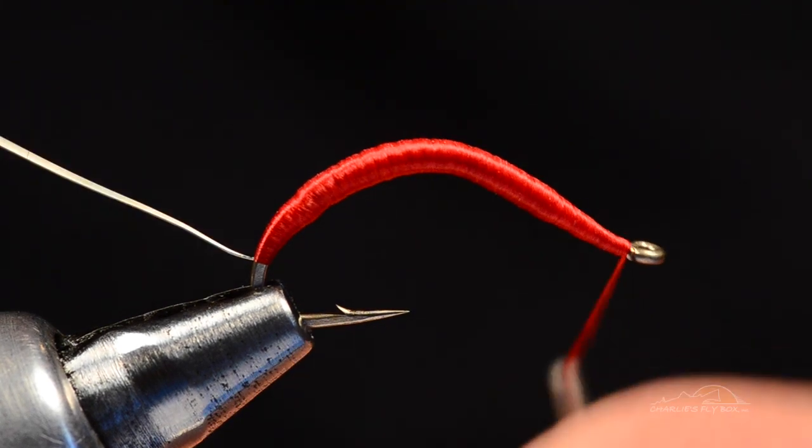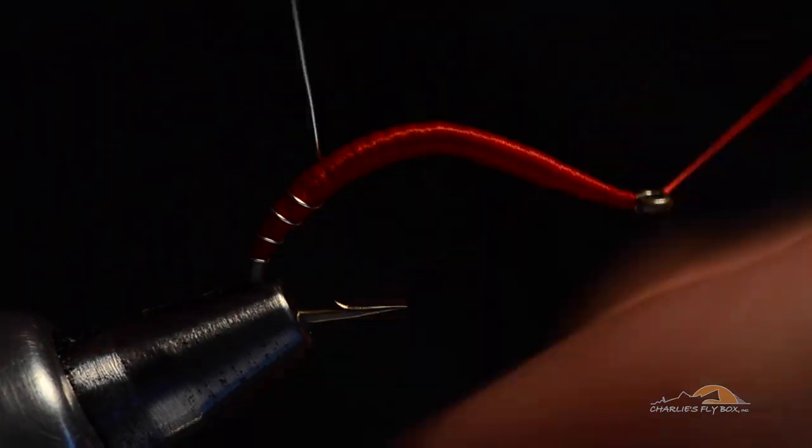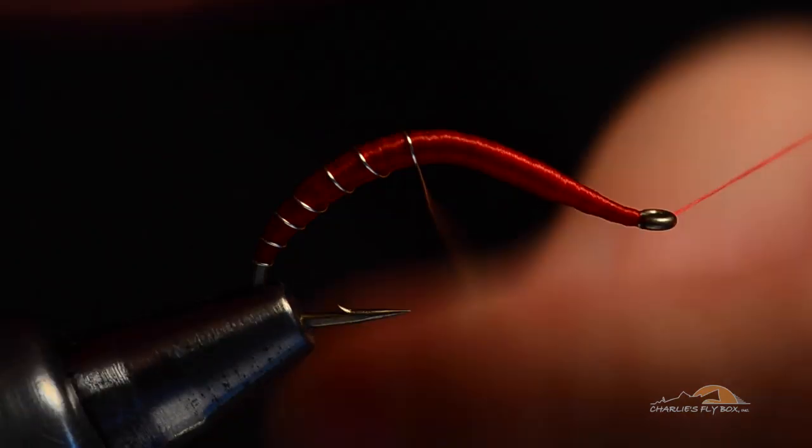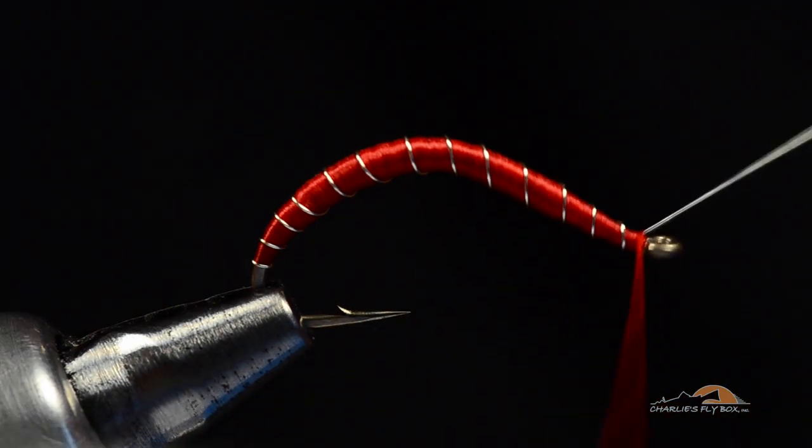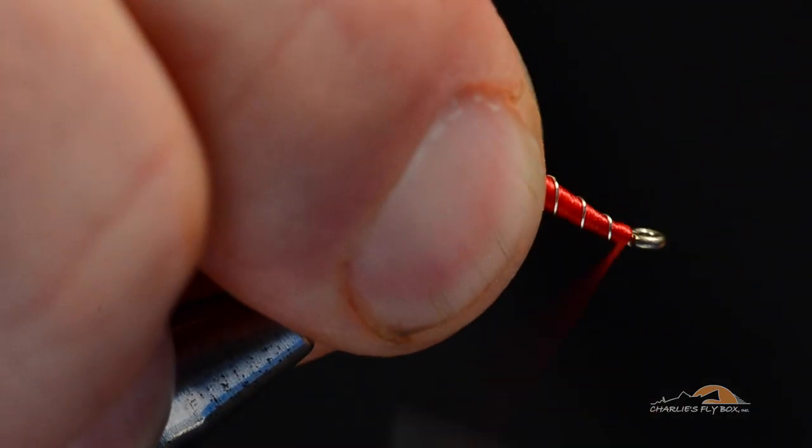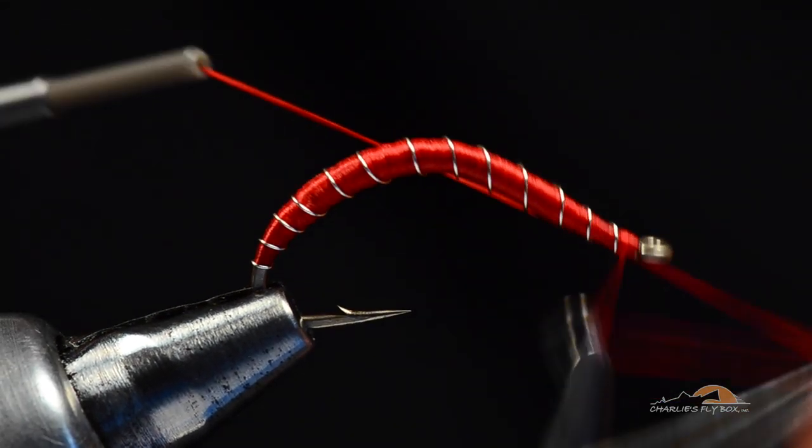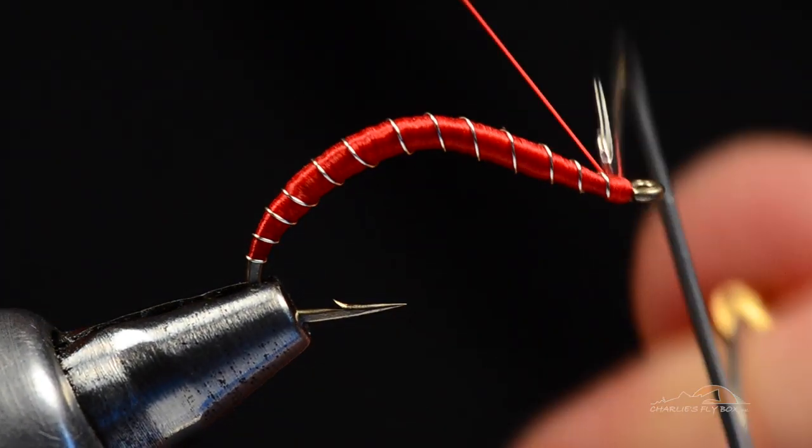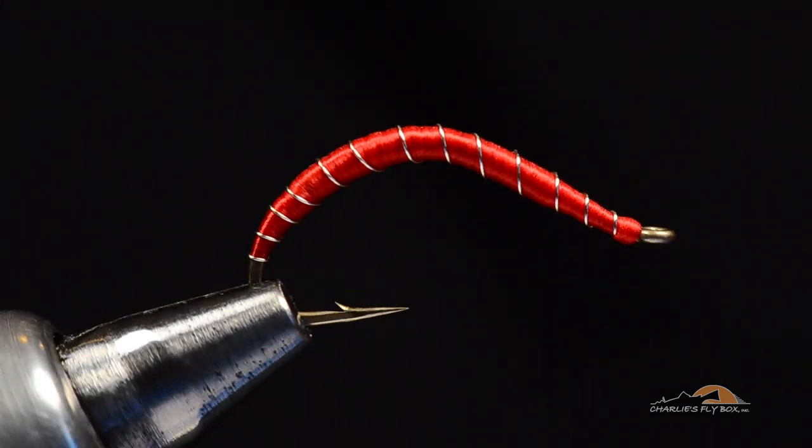And now I'm going to take my silver wire and I'm just going to evenly spiral this up the hook. Right up to the eye. Tie it off with a few turns. Just pop that out. Just a little thread ahead to cover that up. Then whip finish up behind the eye. Trim that thread out.